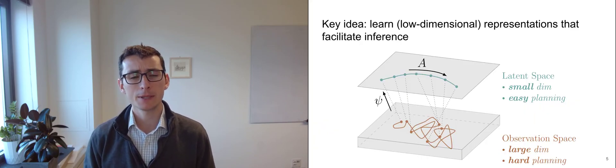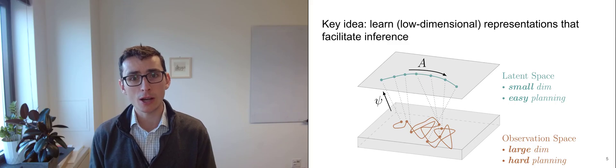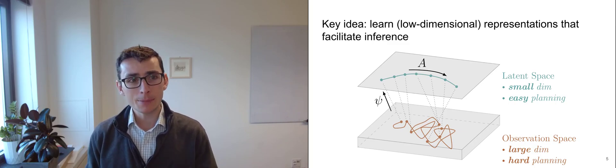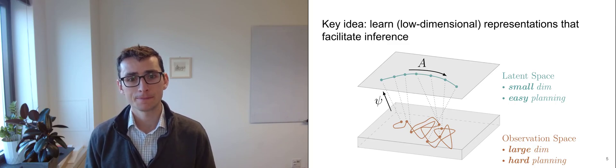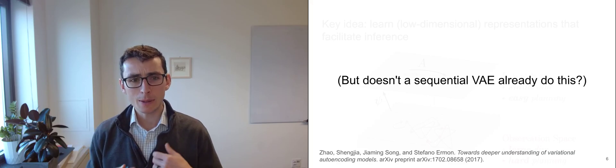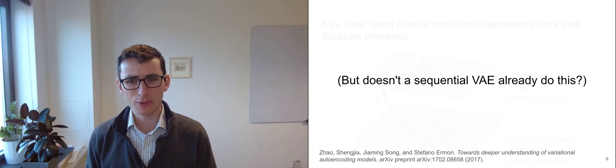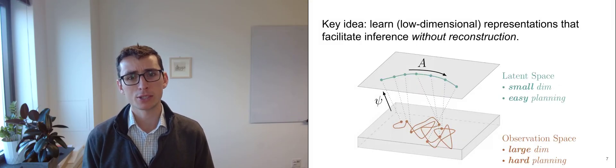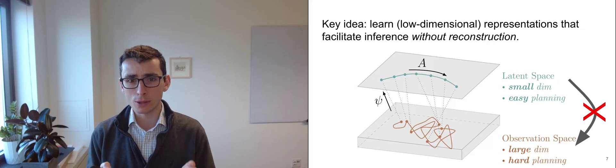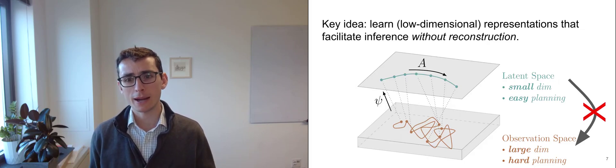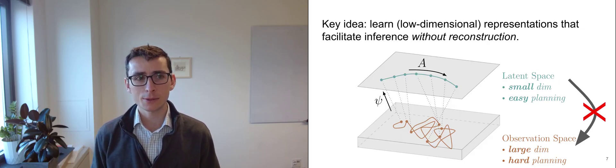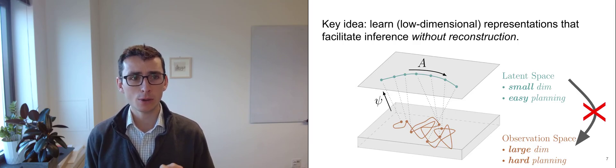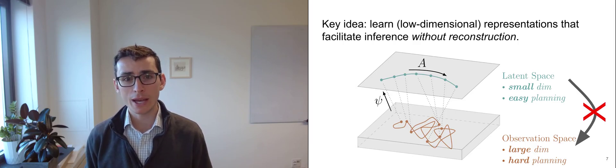The key idea in this paper is to try to learn low dimensional compact representations that enable this sort of inference. Now, you might be wondering, doesn't a sequential VAE already do this? It does, but it requires reconstruction. It requires learning how to map these low dimensional representations back to high dimensional data. In this paper, we're trying to figure out, is there a way of learning these representations without reconstruction?